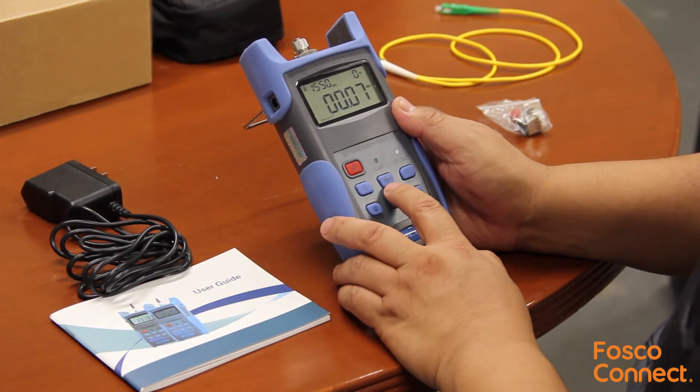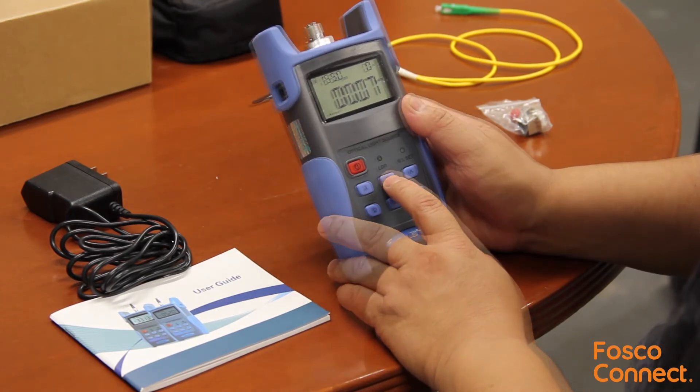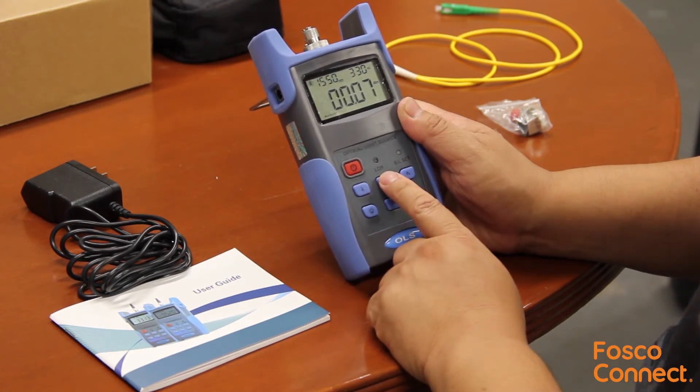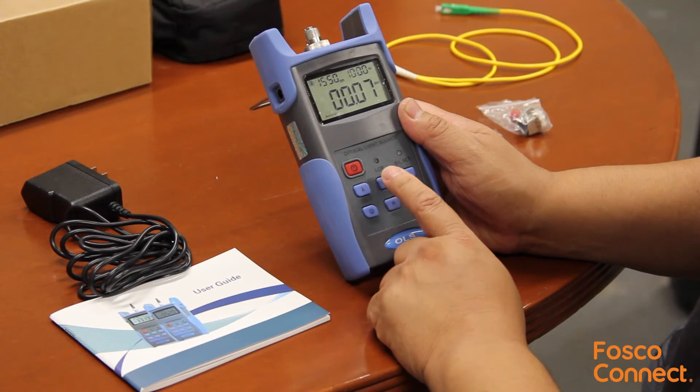This mode switch button switches the light source between 0Hz continuous mode, 270Hz pulse mode, 330Hz pulse mode, 1000Hz pulse mode, and 2000Hz pulse mode.